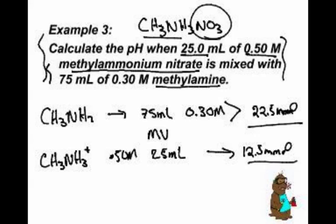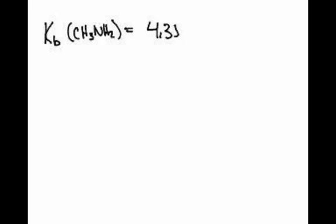So we now have our numbers, 12.5 and 22.5. We do have a particular instance. When you look in your table in the back of your book or in a table, we can look up the KB of methylamine, CH3NH2. And that value, Mr. Sams, is 4.38 times 10 to the negative 4.